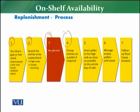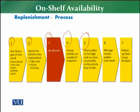Step four: group articles on a pallet if required — for example, if products are available in the store at low stock, you group them on the pallet as needed. Step five: store the pallet in the hyrax as close as possible to the article bay, so the backup stock is right next to the shelf and you can fill the gap immediately. Step six: manage empty pallets and waste. Step seven: follow up with root cause analysis so the gap mistake does not occur again.